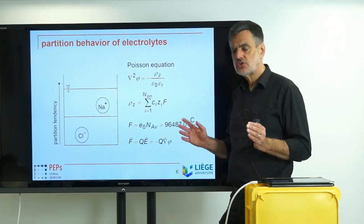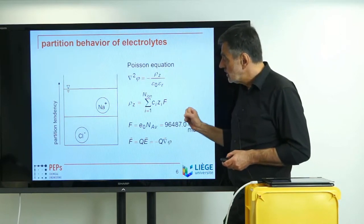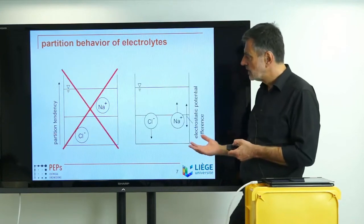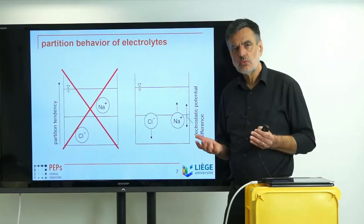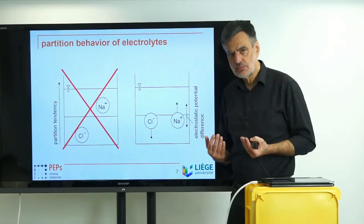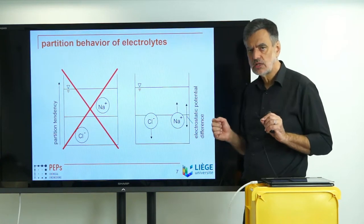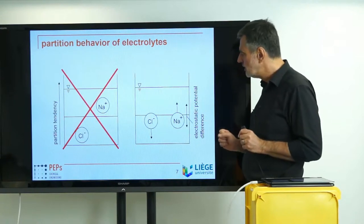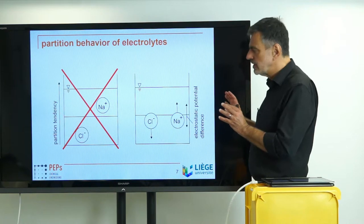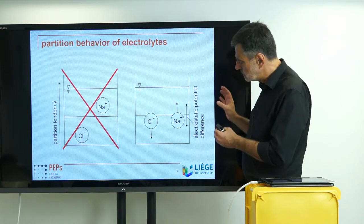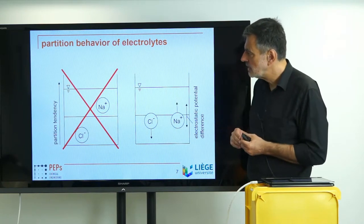So we realize that the picture of completely independent partitioning is wrong. In reality, both ions have to agree somehow on how they want to partition between the phases, and they have to come up with an identical partition coefficient. Nevertheless, both ionic species still feel that they would like to partition independently — they feel their original partition behavior — and that leads to the so-called electrostatic potential difference. Now we want to derive that more systematically and rigorously, based on solid thermodynamic considerations.